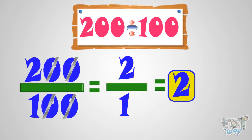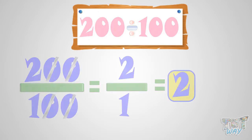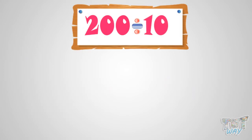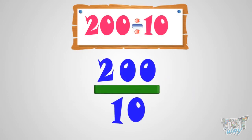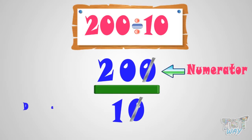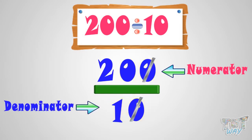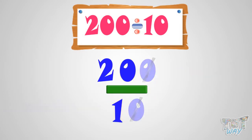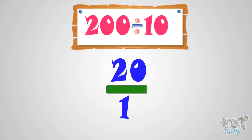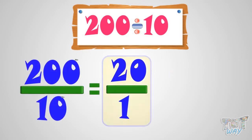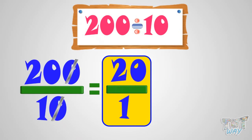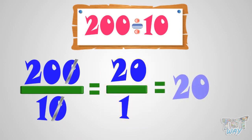Now let's take another example — let's divide 200 by 10. In order to divide with 10, we have to cut the rightmost zero from the numerator and denominator. So, we are left with 20 by 1, or 20. So, 200 by 10 equals 20 by 1 equals 20.